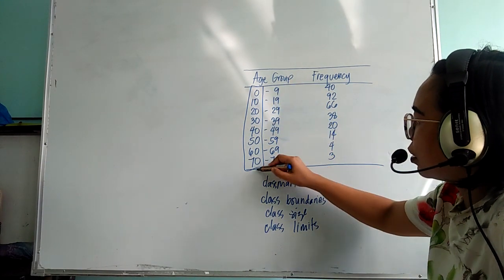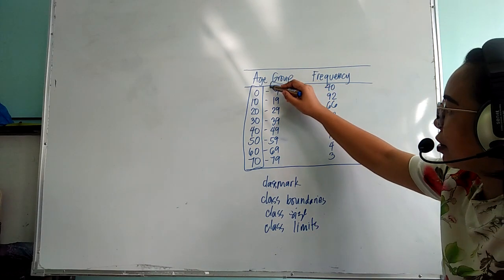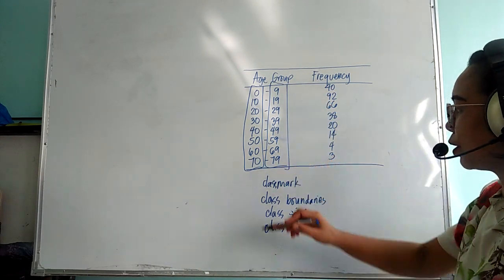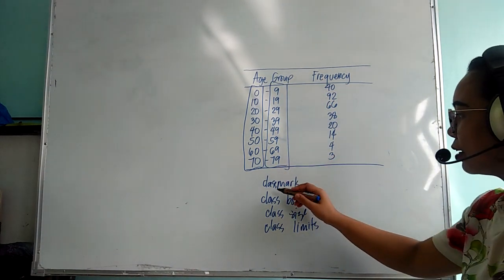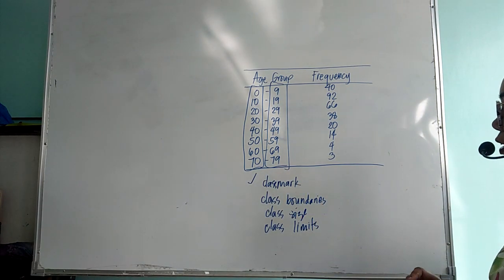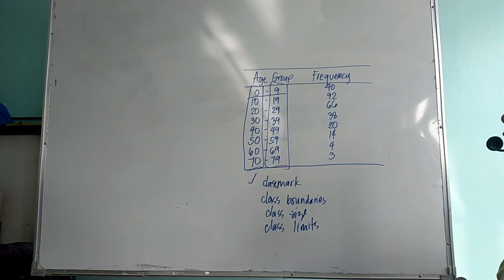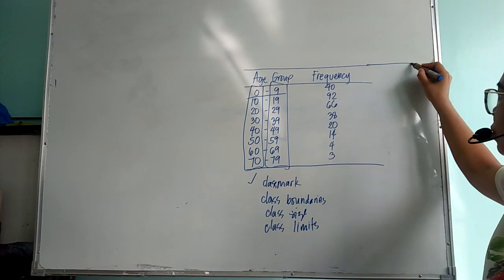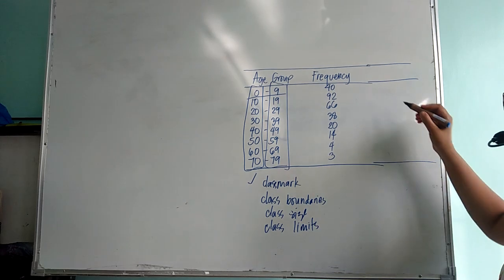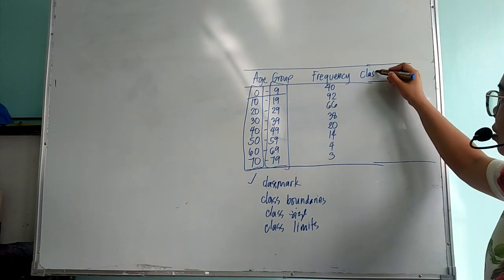These are our lower limits and these are the upper limits. The class mark is the average between zero to nine. So basically this is the average of your interval. So we will add another column here for our class mark.